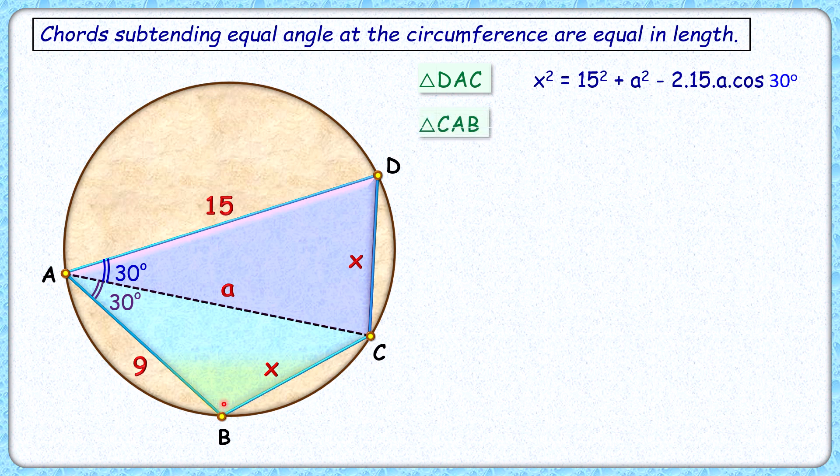In the same way, in this yellow triangle we'll apply the cosine law and get x² = 9² + a² - 2 times 9 times a times cos 30°. And yes, we can see here both terms are equal to x².